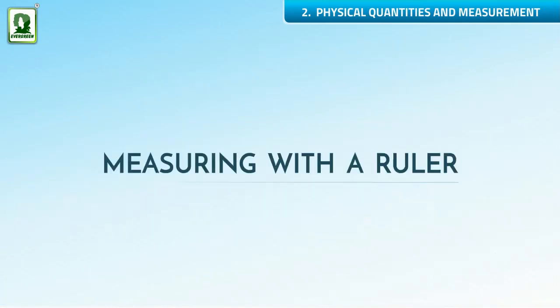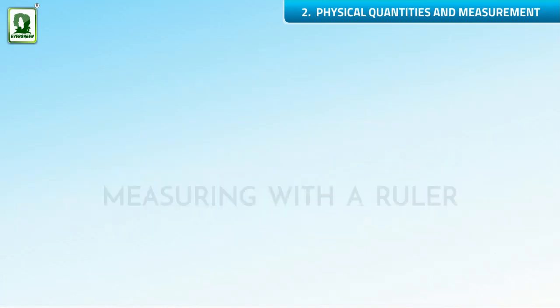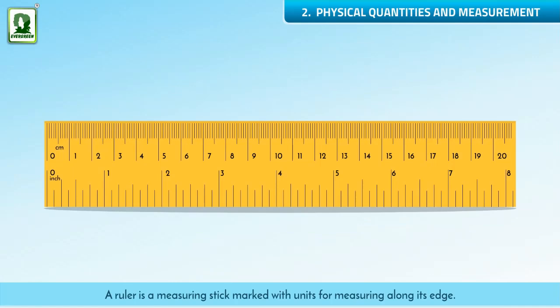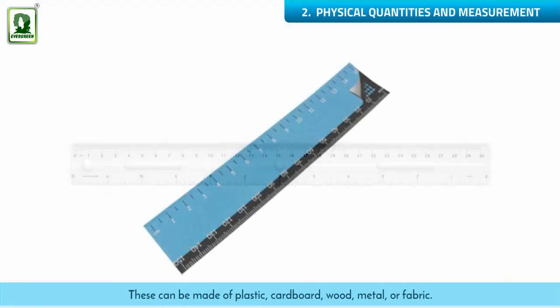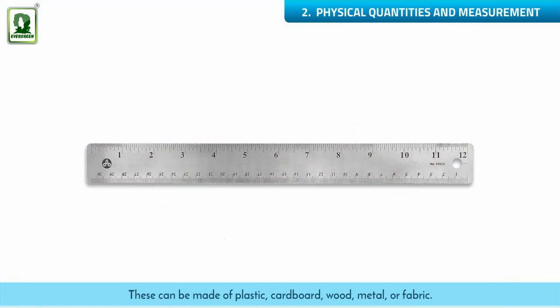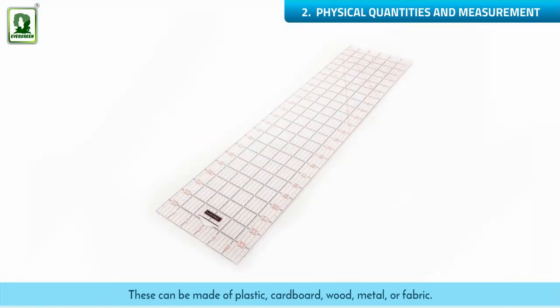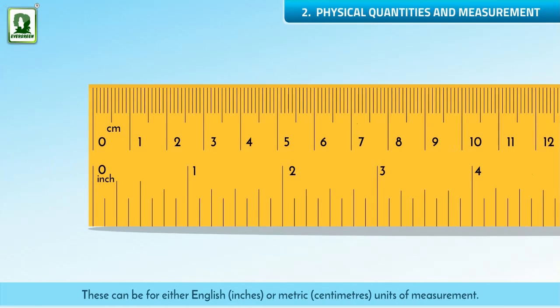Measuring with a ruler. A ruler is a measuring stick marked with units for measuring along its edge. These can be made of plastic, cardboard, wood, metal, or fabric. These can be either English, in inches, or metric, in centimeters, units of measurement.